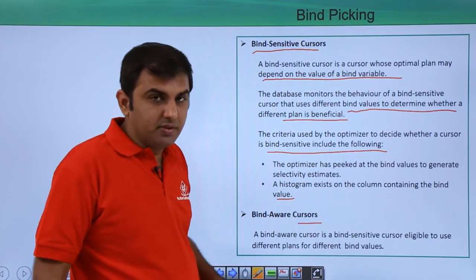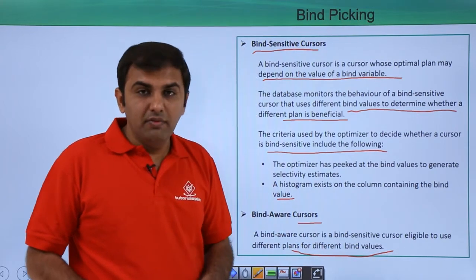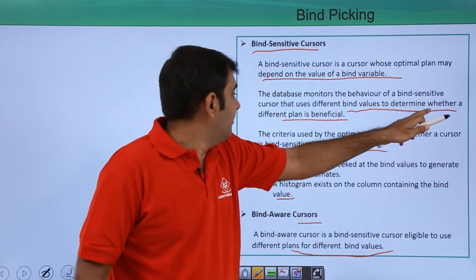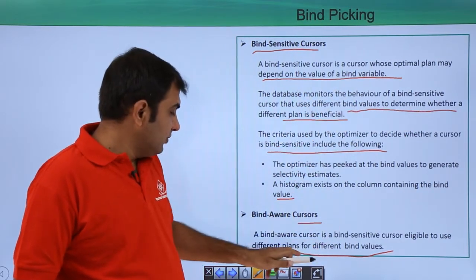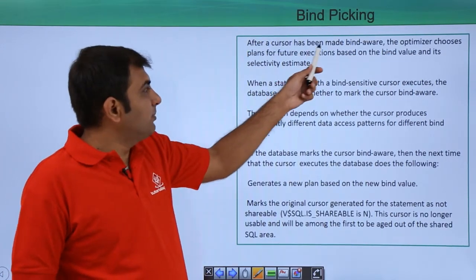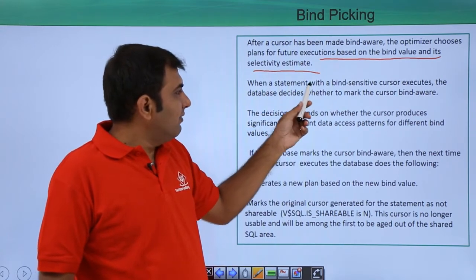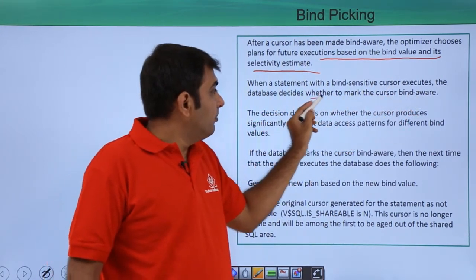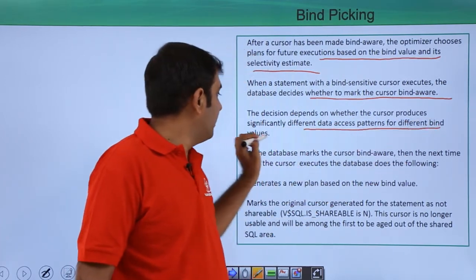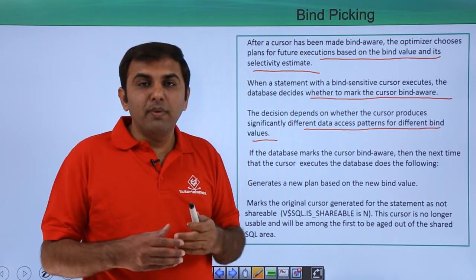A bind aware cursor is a bind sensitive cursor eligible to use a different plan for different bind variable values. The difference is: a bind sensitive cursor is monitored to determine whether a different plan is beneficial, whereas a bind aware cursor is already eligible to use different plans. After the cursor has been made bind aware, the optimizer chooses the plan for future execution based on the bind value and its selectivity estimate. The decision depends on whether the cursor produces a significantly different data access pattern for different bind variables - if different execution plans are being generated then it is marked as bind aware.